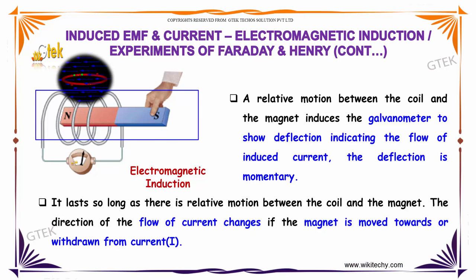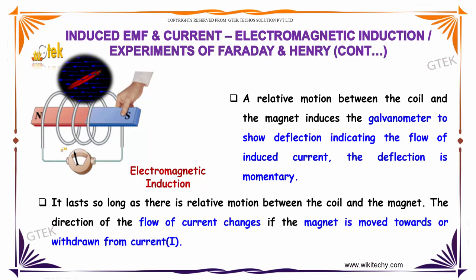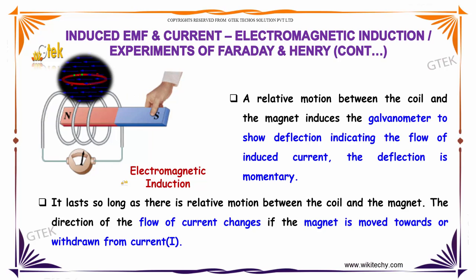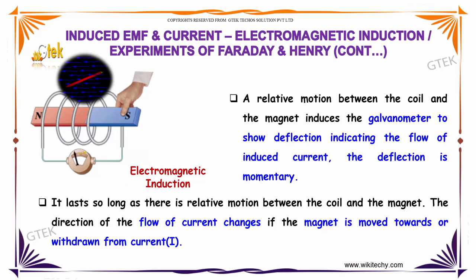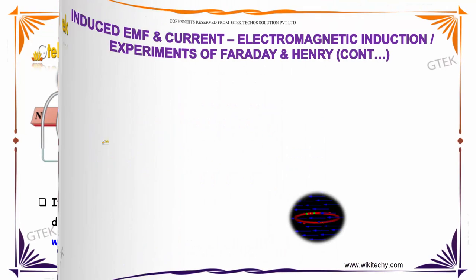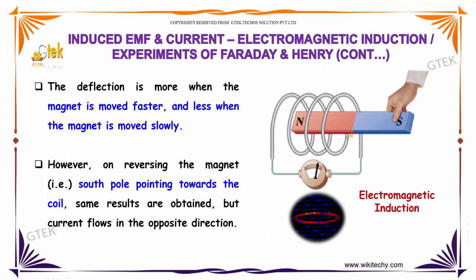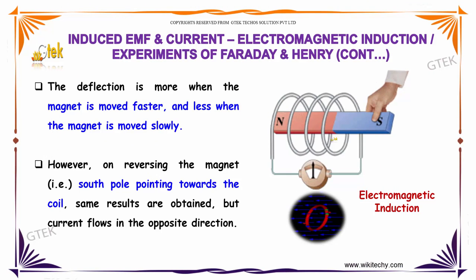The direction of the flow of the current changes if the magnet is moved towards or withdrawn from the coil. You are able to see — once it is moved forward, the current flows in one direction; if it is moved backward, the current reverses. The deflection is more when the magnet is moved faster, and less when the magnet is moved slowly.